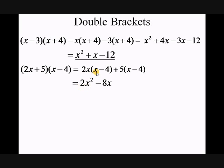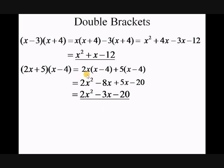2x times x gives 2x squared, 2x times minus 4 gives minus 8x. The second bracket: 5 times x is 5x, and 5 times minus 4 is minus 20. Again in the middle I've got an x term I can simplify — minus 8 plus 5 of x gives me minus 3x in the middle.